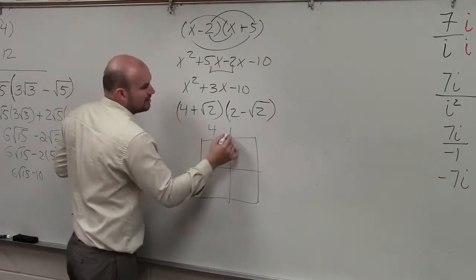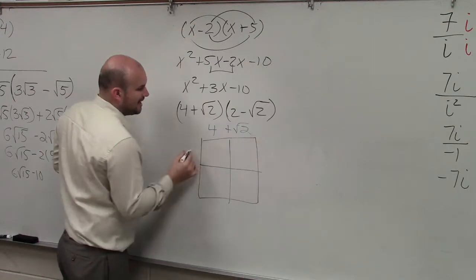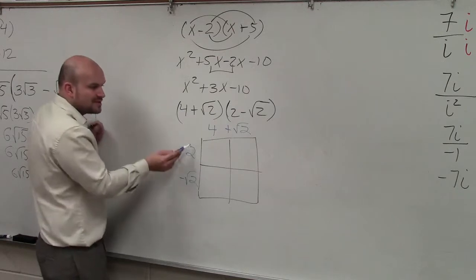So I have 4 plus the square root of 2. And I have 2 minus the square root of 2. Now I just multiply to find the area of each box.